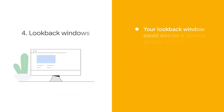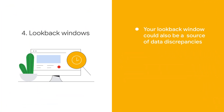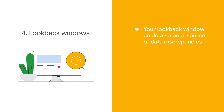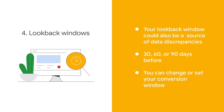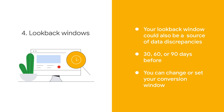Your look back window could also be a source of data discrepancies. Conversions on your site can be reported from ad clicks that were 30, 60, or 90 days before. You can change or set your conversion window, since a shorter conversion window will reduce the number of conversions your account records for your conversion action.